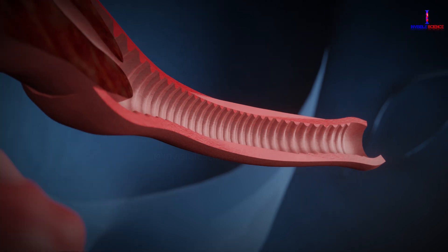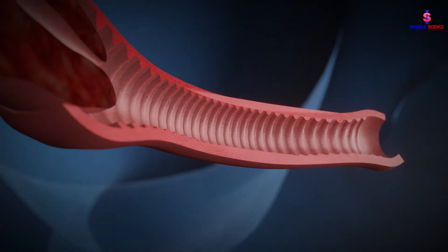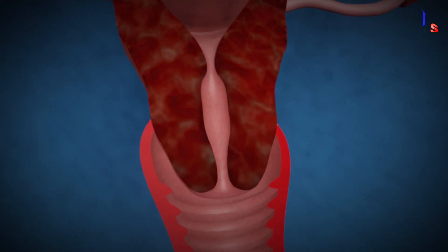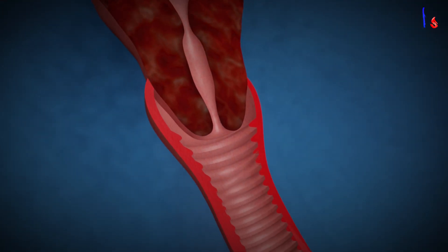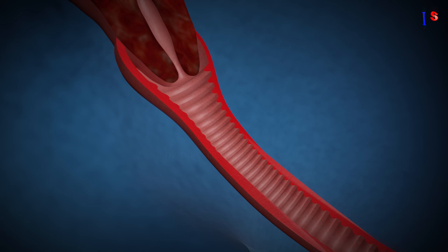The vagina is a muscular canal that connects the cervix to the external genitalia. It serves as a passage for sexual intercourse and as a birth canal during delivery.